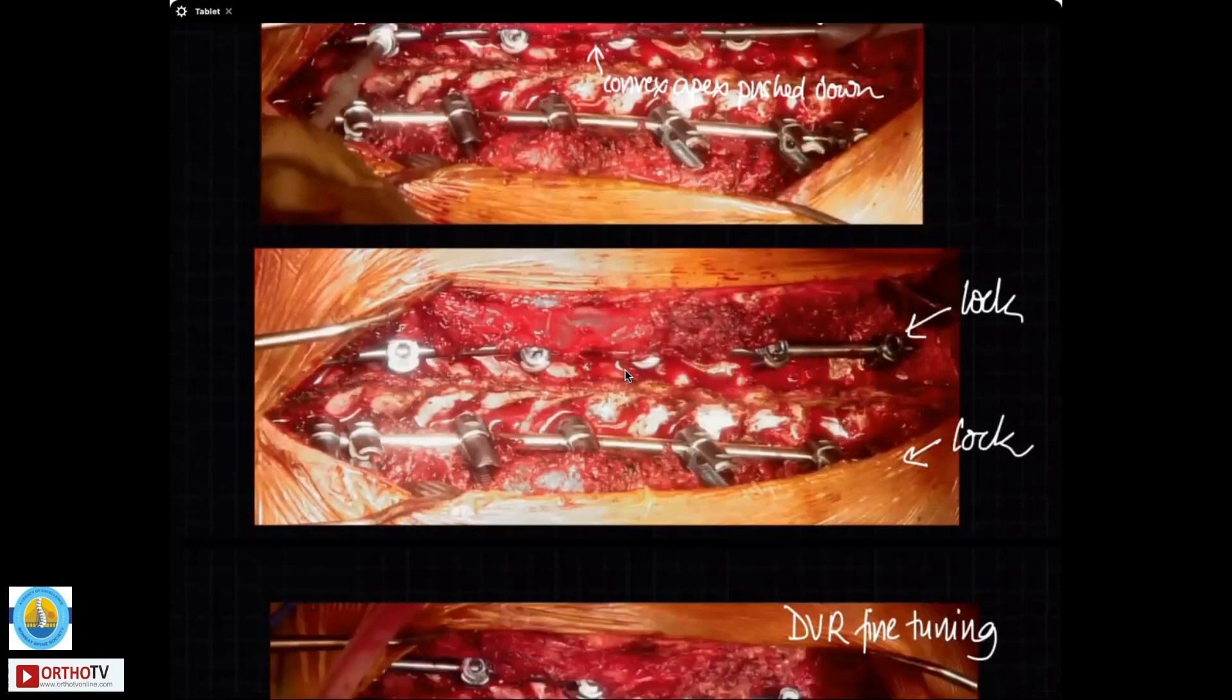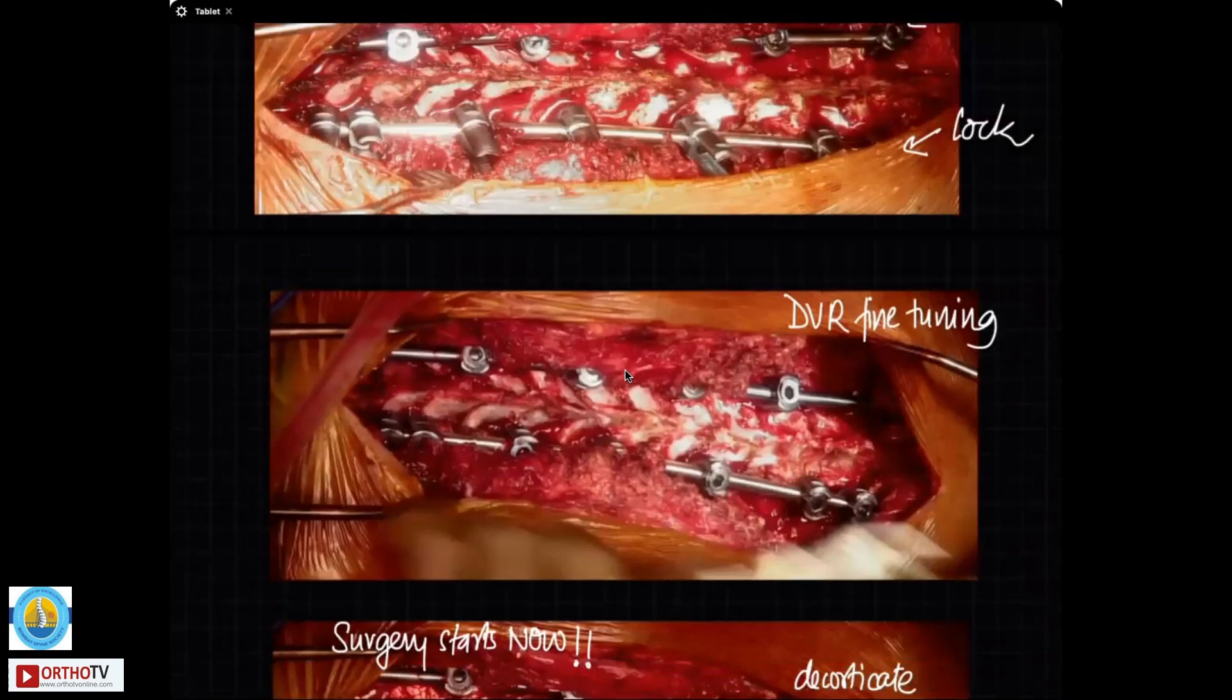If you want to do further derotation correction, then you can use DVR to correct even more or any fine tuning that you want to do, you can use compression and distraction at these segmental levels. Now, remember that you want to use concave side distraction more in the thoracic spine because distraction in the thoracic spine will induce kyphosis in the sagittal plane. So you don't want to use compression maneuver on the convexity side as your primary means of correcting the cobb angle because that will reduce your kyphosis. I hope that is clear.